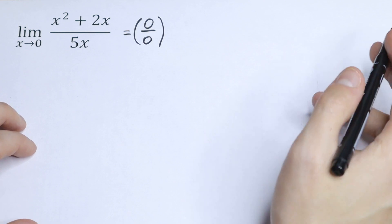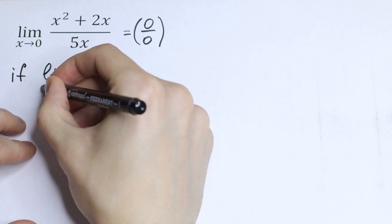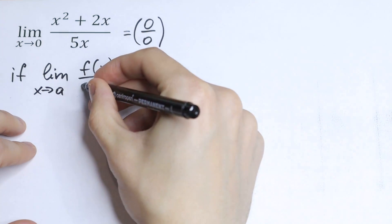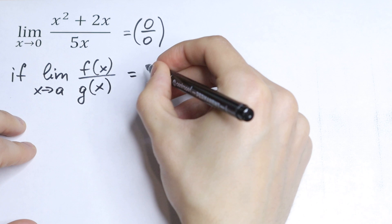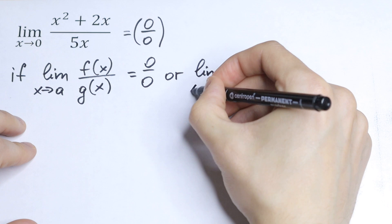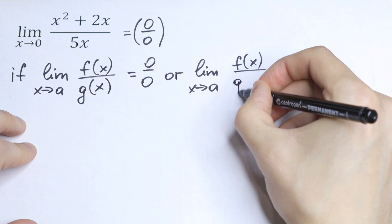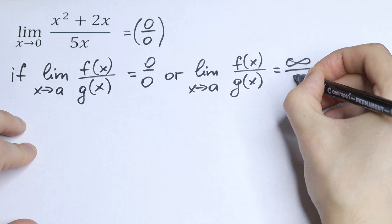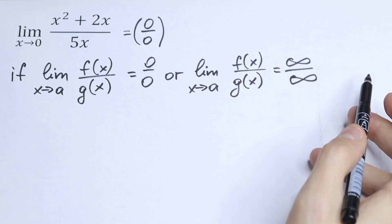So what we're going to do next? If limit x approaches to a of the function f over g equals 0 over 0 or limit x approaches to a of the same function f(x) over g(x) equals infinity over infinity, so we can apply L'Hôpital's rule.